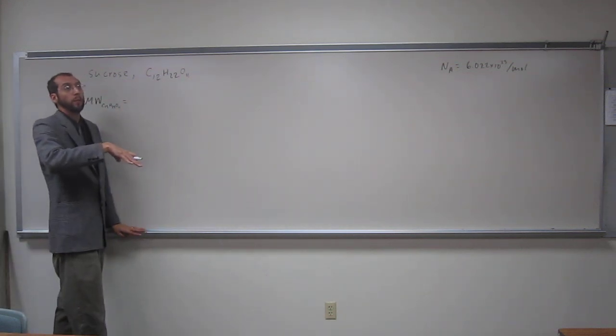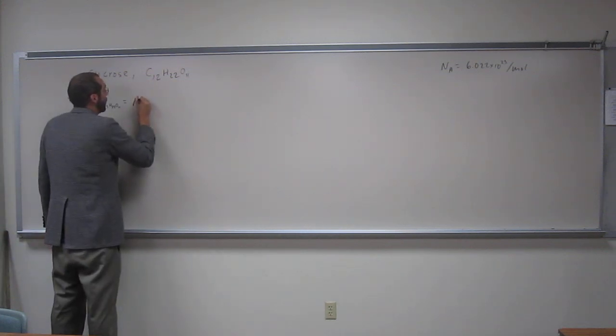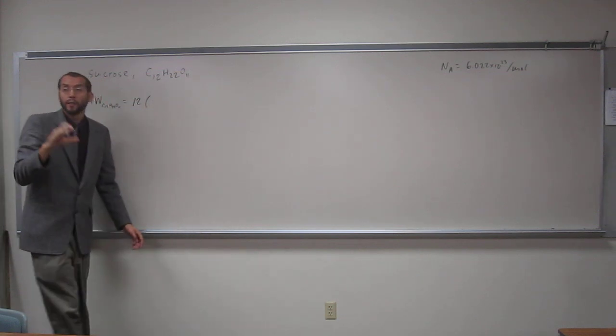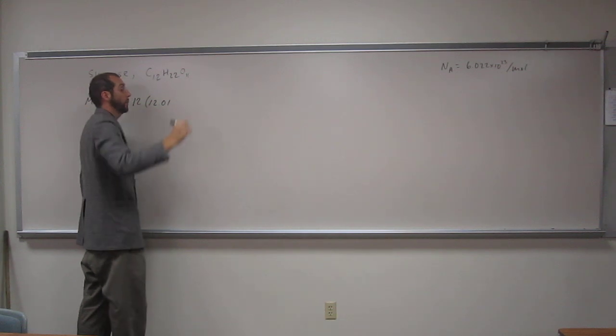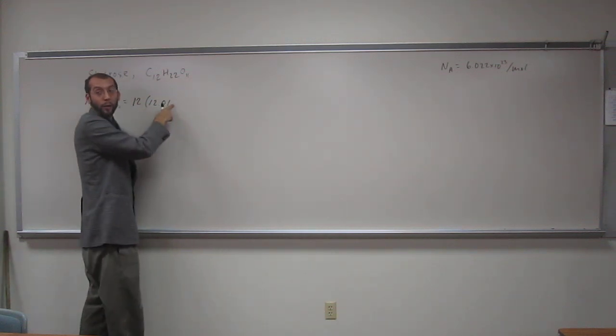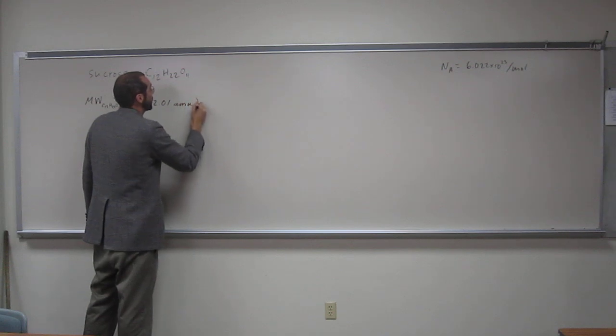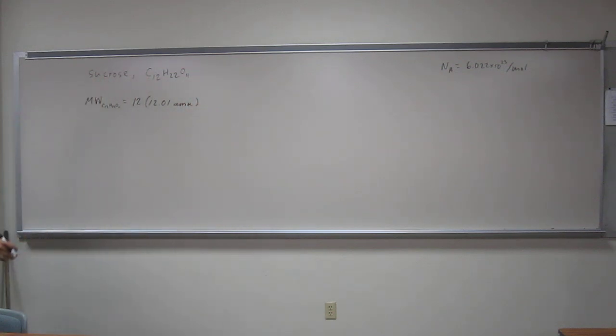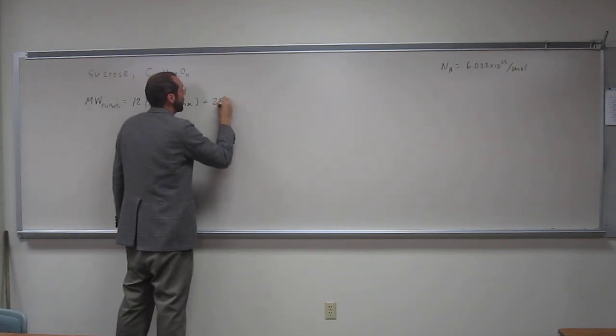So we get those values from the periodic table. So 12 times the atomic weight of carbon, right? 12.01. I got that from the periodic table. And then remember, that's an AMU or Daltons if you want. But we've been using AMU mostly in this one. So then 22 times hydrogen.